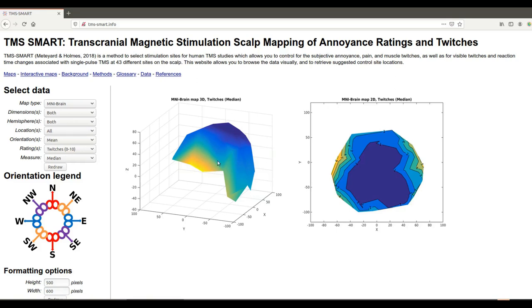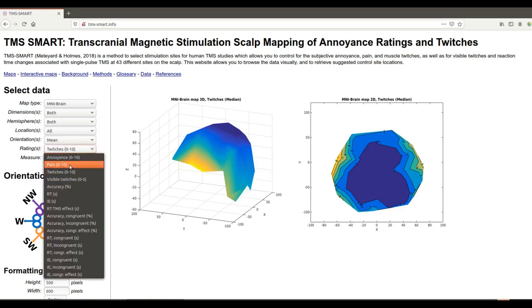It's not just twitches. We recommend looking at twitches because that was the single measure which was most strongly correlated with the other measures and which predicted the reaction time effects better. But you can also choose annoyance, pain, twitches or visible twitches. They're all essentially highly correlated with each other.